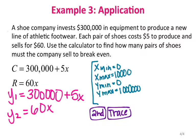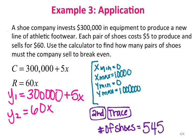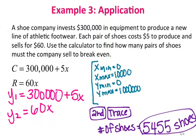The intersection is at x equals 5,454.54 and y equals 327,272. So the number of shoes to break even is 5,455 shoes. You could also solve this algebraically by setting the two equations equal to each other: 60x equals 300,000 plus 5x, then solve for x. But for more complex nonlinear systems, graphing to find the intersection can be very useful.